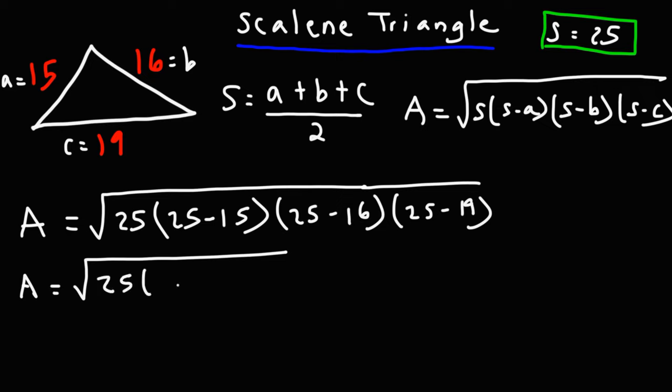25 minus 15 is 10. 25 minus 16 is 9. And 25 minus 19 is 6.